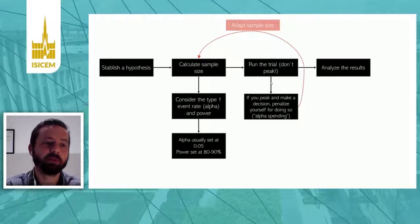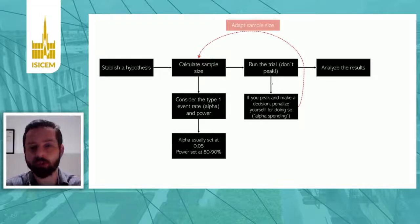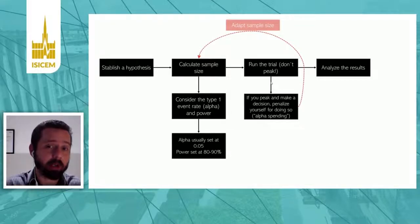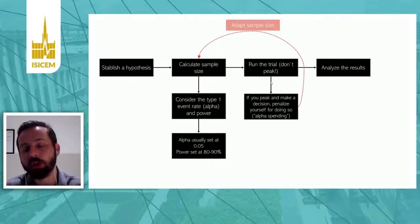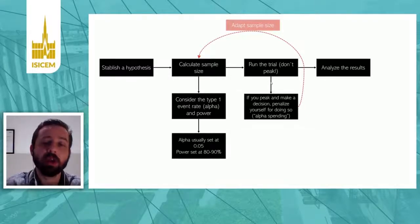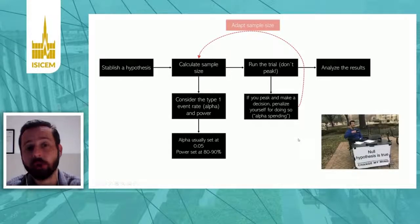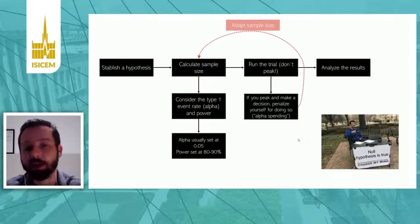From a frequentist standpoint, you establish a hypothesis, calculate sample size, consider the number of Type 1 errors you want — usually set at 0.05 — then set the power, then run the trial. You shouldn't make decisions while running the trial; if you do, you have to penalize yourself, because p-values only make sense for a trial that has finished, while power is a concept that makes sense before the trial begins. You analyze results under a null hypothesis — that is, assuming the null hypothesis is true — and you can try to deny it, but you can never affirm it.